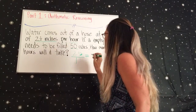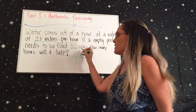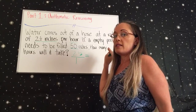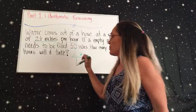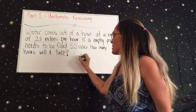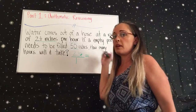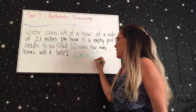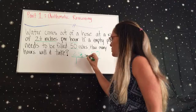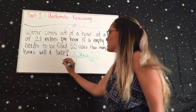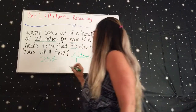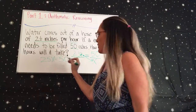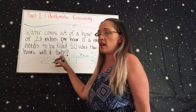You want to make that first fraction equal to another fraction. The only other information you have is the 50 inches that needs to be filled. Make sure you put the 50 on the same line as the inches on the other fraction — the two and a half is the inches. A lot of times people get that mixed up and don't know why they got the wrong answer. Put 50 on the top, then we don't know the hours. Cross multiply: two and a half times X equals 1 times 50. Now divide both sides by 2.5 to get X by itself.